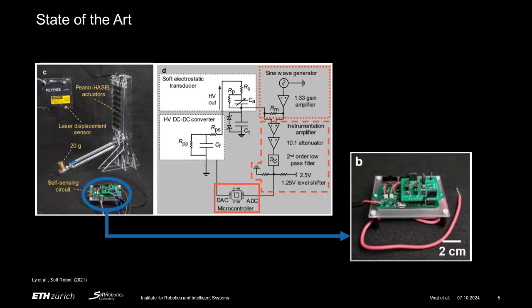A common technique for the self-sensing of HASELs is based on superimposing a low-voltage sinusoidal sensing signal onto the high-voltage driving signal applied to the electrodes of the actuator and measuring changes in the low-voltage signal caused by the change in capacitance between the electrodes as the actuator deforms.